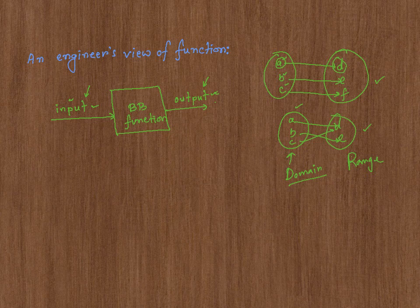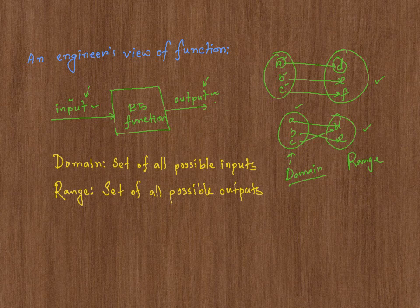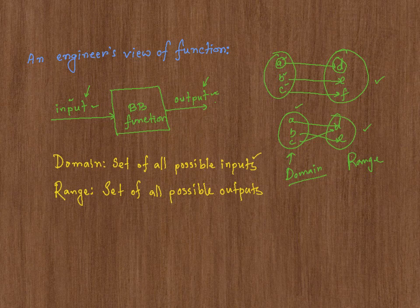Now let me just clarify some of the terminologies here. Set of all the inputs, you're going to call it domain. So here it is. Domain is the set of all the inputs, all the possible inputs, and range is the set of all the possible outputs. And domain is the first set, and range is the second set.